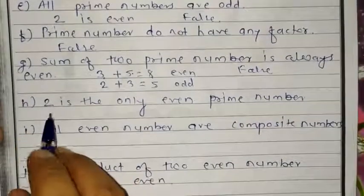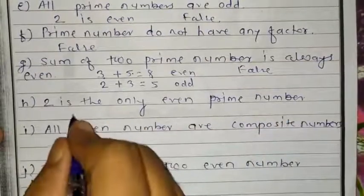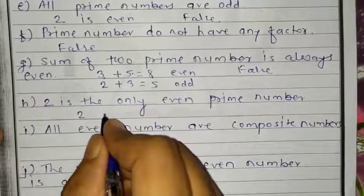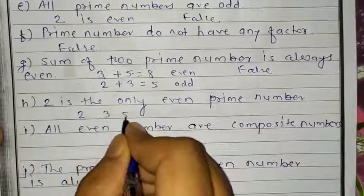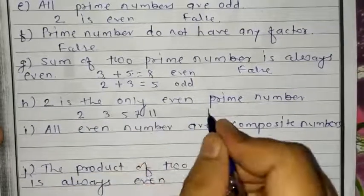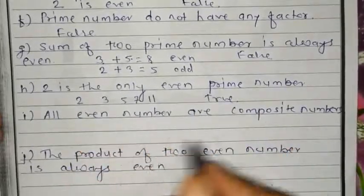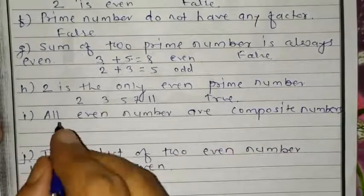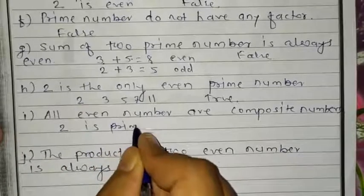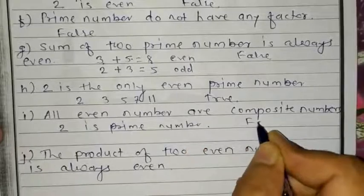Question H: 2 is the only even prime number. It is true, because 2 is even, and all other prime numbers like 3, 5, 7, 11 are odd. So it is true. Question I: all even numbers are composite numbers. But 2 is a prime number, so this statement is false.